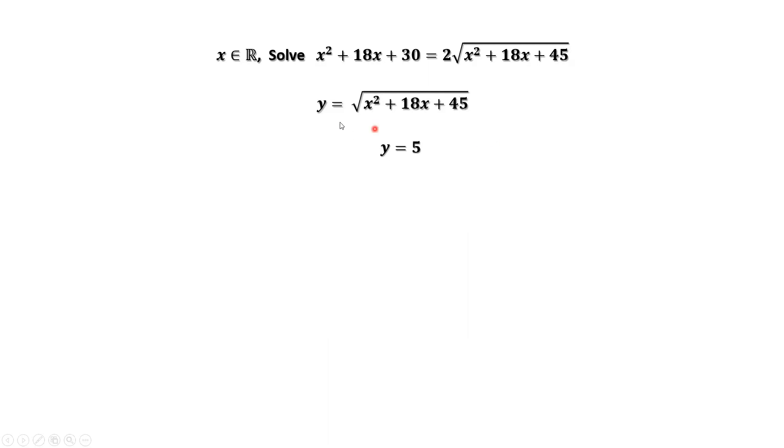By definition, y equals square root of x squared plus 18x plus 45. Then we have square root of x squared plus 18x plus 45 equals 5. We square both sides. Then we have x squared plus 18x plus 45 equals 5 squared.